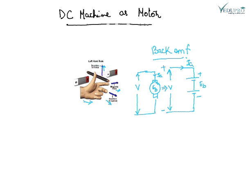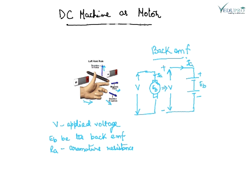Let V be the applied voltage, EB be the back EMF, and RA be the armature resistance. Then IA, the armature current, will be V minus EB upon RA.